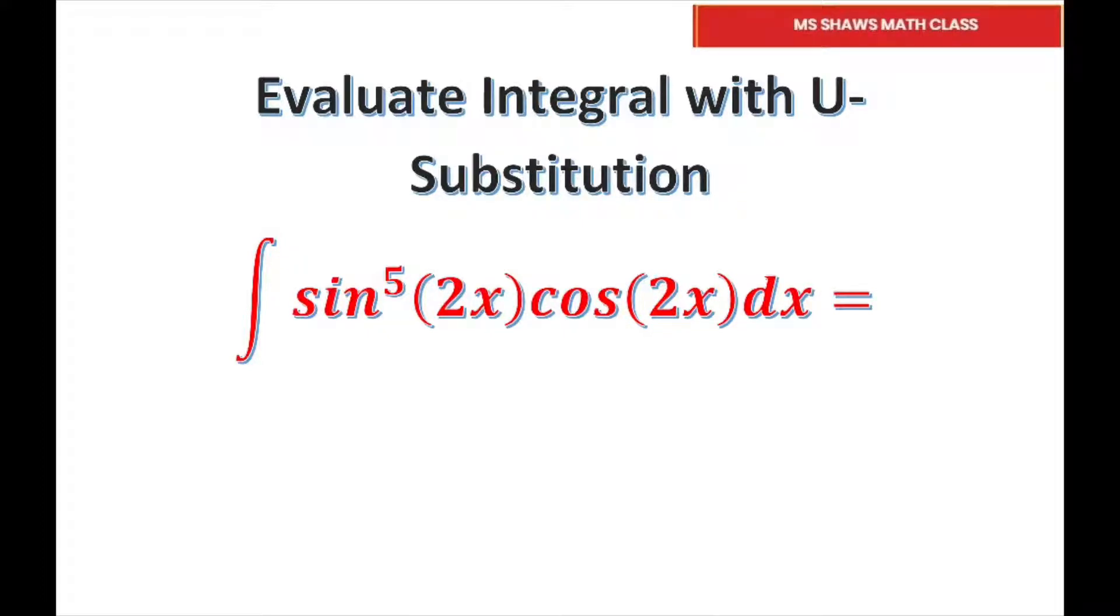So the first thing we want to do is let u equal sine of 2x. Then we want to find the derivative of u, which equals 2 cosine of 2x dx.